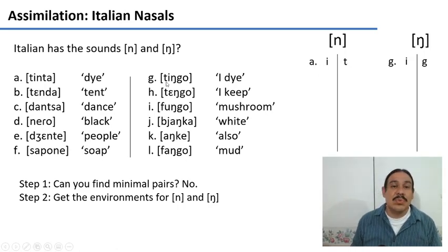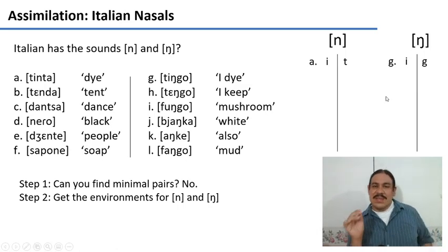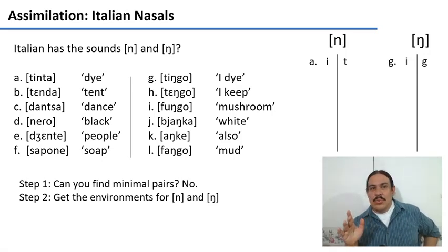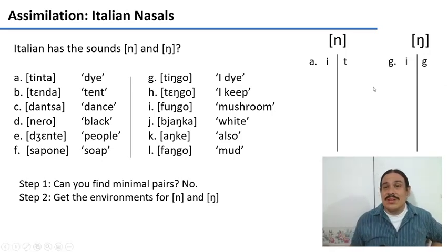In example g, we see a velar engma. It is preceded by the sound e and followed by a g as in tingo. So please grab a piece of paper and take a moment to go through every word and figure out what the environments are for the n and the engma. Please pause the video.